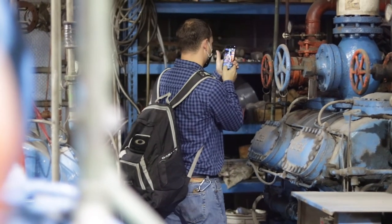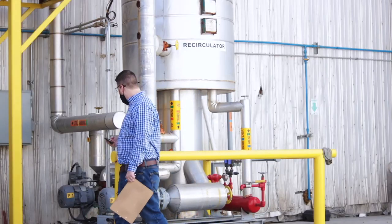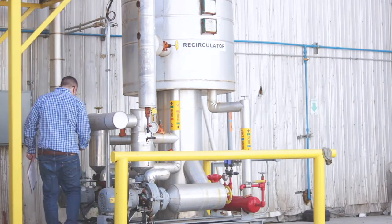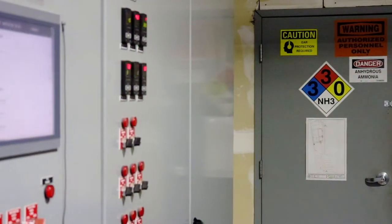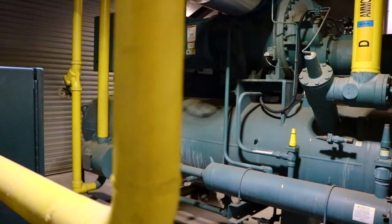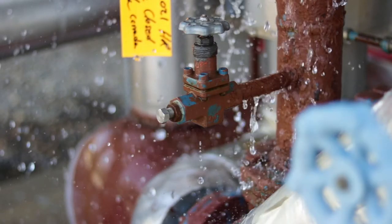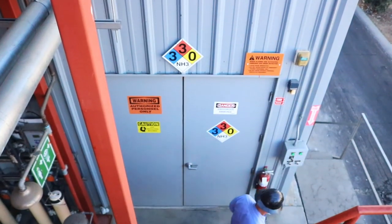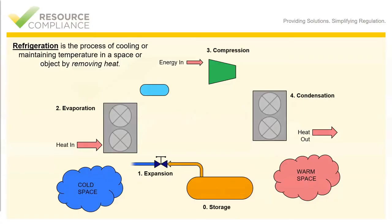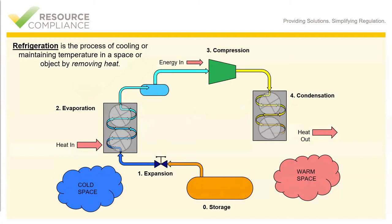In this module we will cover a process overview of an ammonia refrigeration system. After completing this module you should understand the basic elements of how a refrigeration system works, as well as be able to identify the name and primary function of individual components in a basic refrigeration system. Refrigeration is the process of cooling or maintaining temperature in a space or object by removing heat. We'll be using this diagram along with some pictures to facilitate our discussion about the refrigeration cycle.